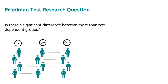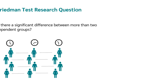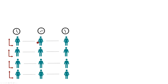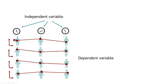This leads us to the research question you can answer with the Friedman test: is there a significant difference between more than two dependent groups? For example, you might want to know whether therapy after a slipped disc influences a patient's pain perception. You measure pain perception before the therapy, in the middle, and at the end. Your independent variable is time, and your dependent variable is pain perception — you want to know whether therapy has an influence on pain perception over time.